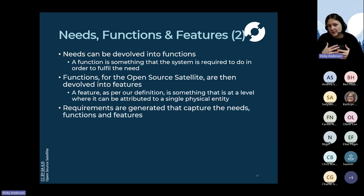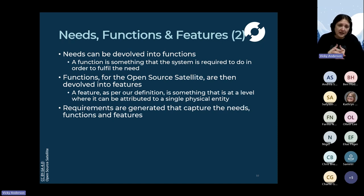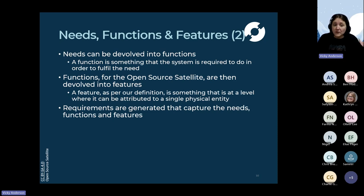To build an architecture and therefore a physical product, we need to think about what functionality is required to service the needs we've identified - what the system has to do to make that need a reality. Within the open source satellite itself we are refining our functions and calling them 'features', which are functions that can be attributed to a single physical entity, getting us down to a granular level. Across all levels - needs, requirements, functions, and features - requirements are generated to capture what they are.